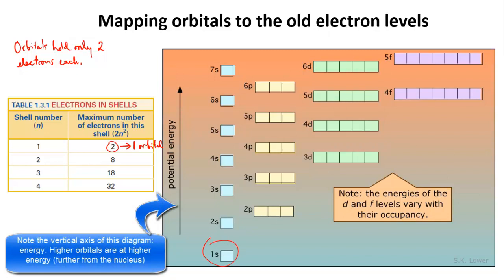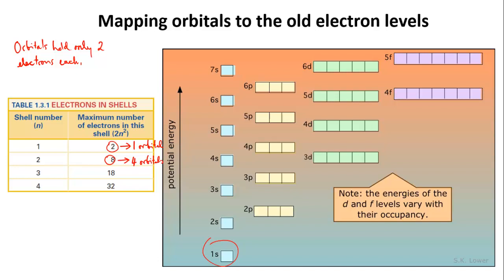1 tells you the energy level, it's the first energy level, and s tells you the type of orbital. Level 2 is able to hold eight electrons, as you know. Since each orbital can only hold two electrons, that means that the second energy level must be made up of four orbitals, each holding two electrons.